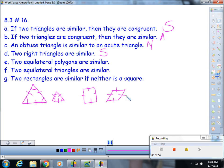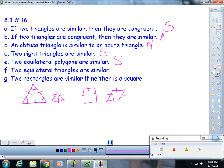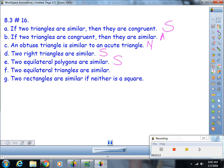Part F: Two equilateral triangles are similar. Based on my last picture, that is always. Part G: Two rectangles are similar if neither is a square.